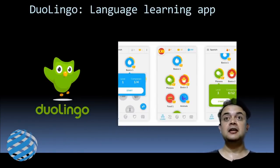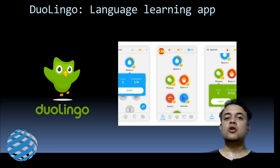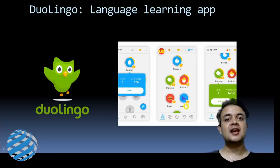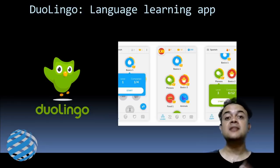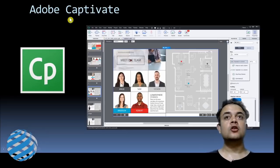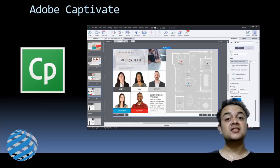Duolingo is another interesting example — it's a popular language learning app for Android and iOS that gamifies language learning. It is step-by-step, like a video game: Basic 1, Phrases, Basic 2, Animals, and so on. The algorithm is also self-learning in designing cognitive scaffolding — it depends on how you react to each lesson. Adobe Captivate can also be used for designing this kind of personalized education, though it is not a free solution.